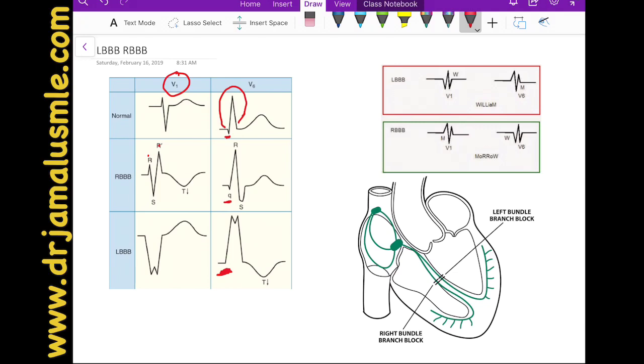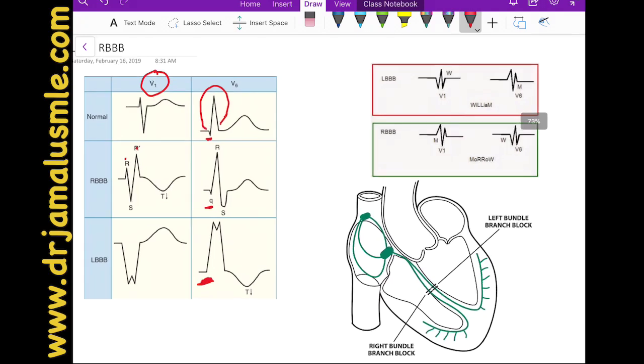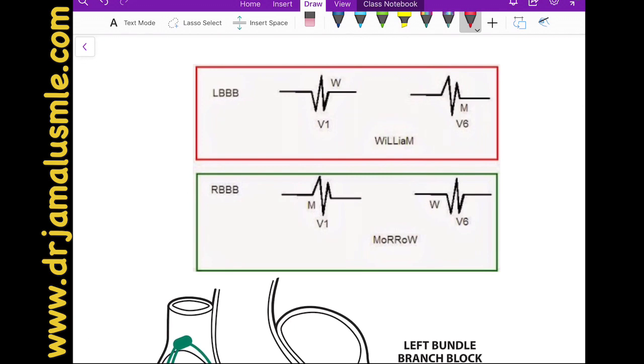So, if you have studied for your USMLE exams, you've probably seen this, what we call William Morrow. So W stands for a W in V1, M stands for M in V6, and the L in between will remind you that this is a left bundle.